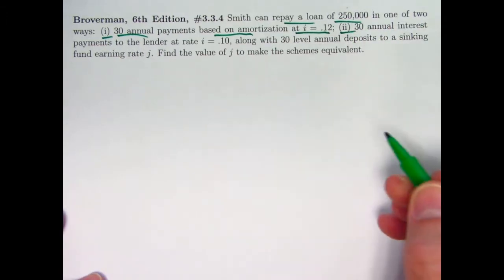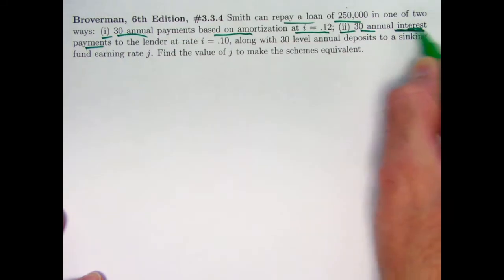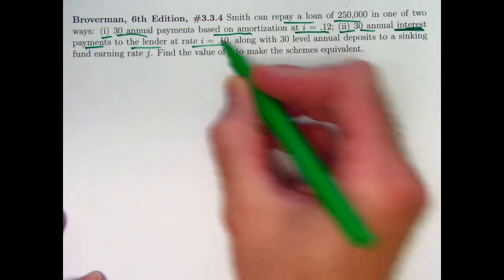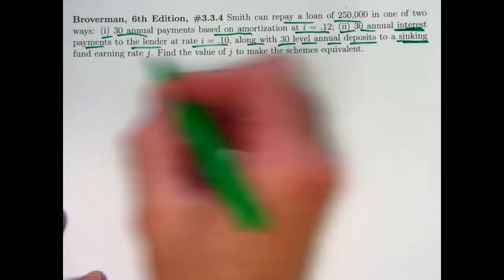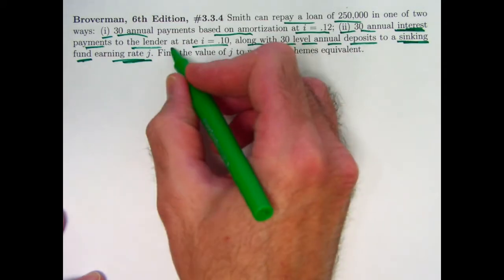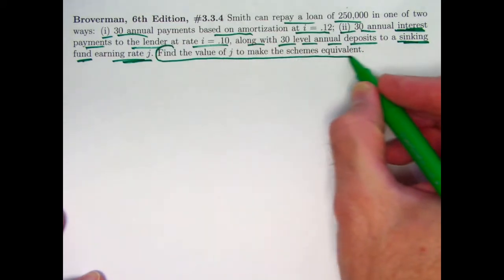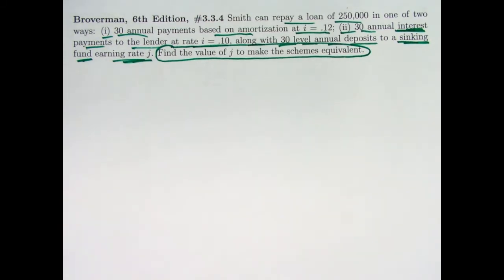The second option is with a sinking fund. 30 annual interest payments, just interest, to the lender at rate of 10%, along with 30 level annual deposits into a sinking fund that's earning an unknown interest rate J. The goal is to find the value of J, which is an effective annual rate that's going to make the two schemes equivalent.